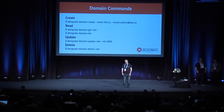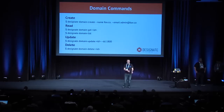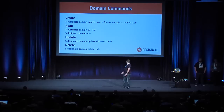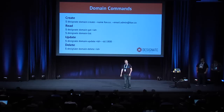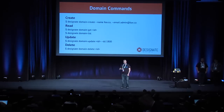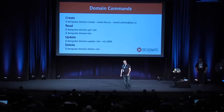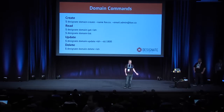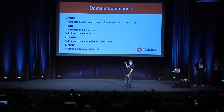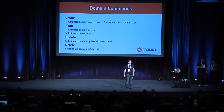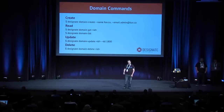With the CLI you can create zones — for example, 'designate domain-create --name example.com', and give it a TTL and responsible email at the same time. You can show zone information with 'domain-get' and the zone ID, or list all zones in your tenant with 'domain-list'. To update a zone, use 'domain-update' with the ID and options like '--ttl 1800'. You can delete a zone by giving its ID, which will also delete all its records.